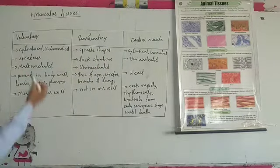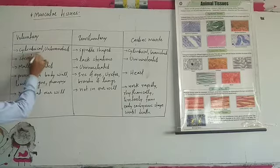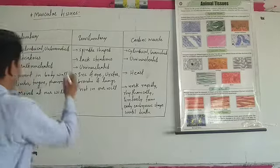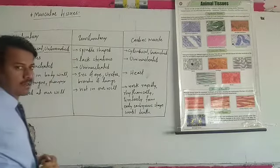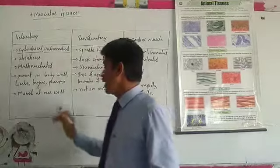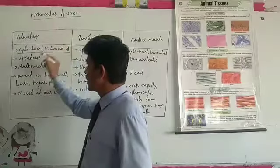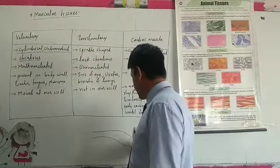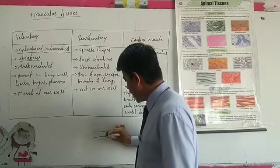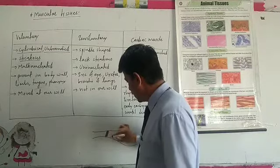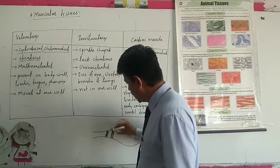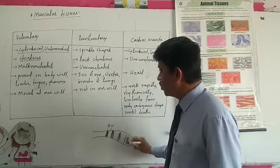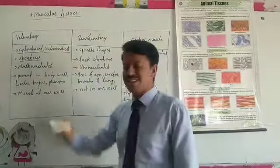In voluntary muscles, the group of cells is cylindrical in shape and they are unbranched. Striations are present on voluntary muscles — alternating dark bands and light bands. These cells are multinucleated, meaning they contain more than one nucleus.